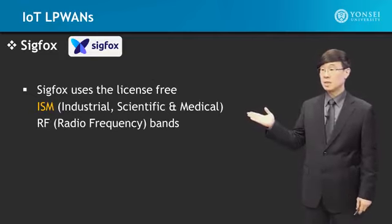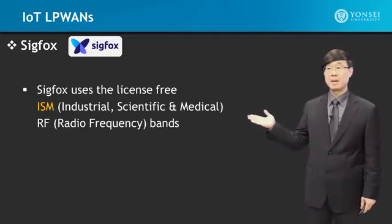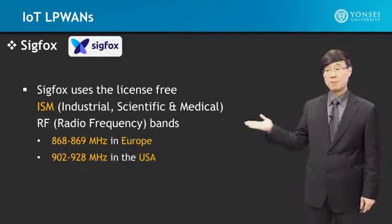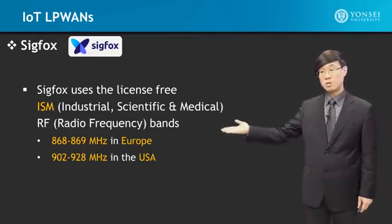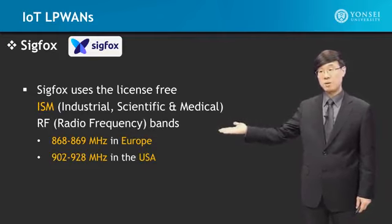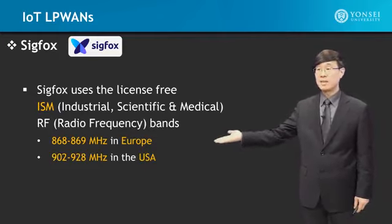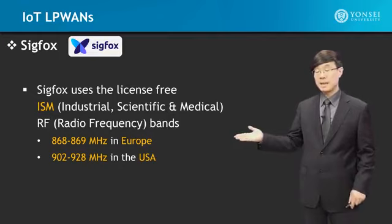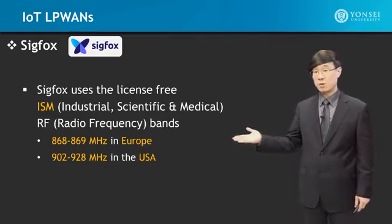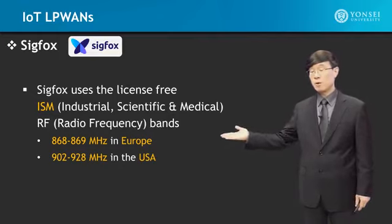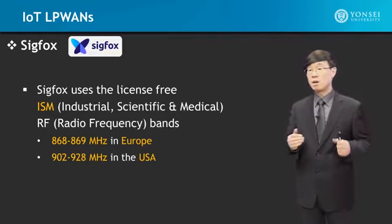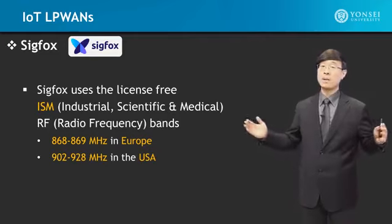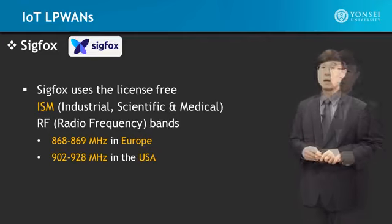SIGFOX uses the license-free ISM band. The frequency ranges used are the 800 MHz range in Europe and the 900 MHz range in the United States. These ISM band frequencies have characteristics that make them very well penetratable through solid objects.